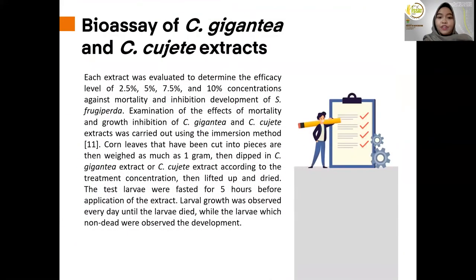Bioassay of C. gigantea and C. dujete extract. Each extract was evaluated to determine the efficacy level at concentrations of 2.5%, 5%, 7.5%, and 10% against mortality and inhibition of development of Spodoptera frugiperda. The effect of mortality and growth inhibition was assessed using the immersion method. Corn leaves were cut, then weighed at 1 gram and dipped in C. gigantea or C. dujete extract according to the treatment, then lifted and dried. The test larvae were starved for 5 hours before application of the extract. Larval growth was observed every day until the larvae died, while larvae that were confirmed dead were observed for developmental changes.